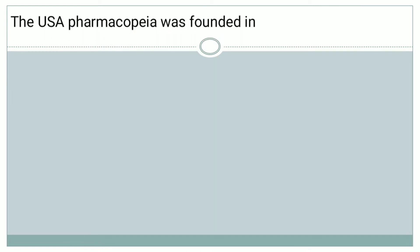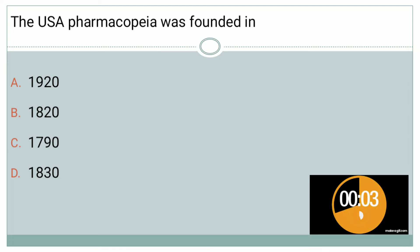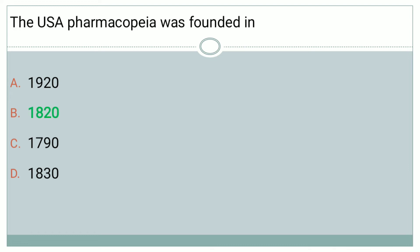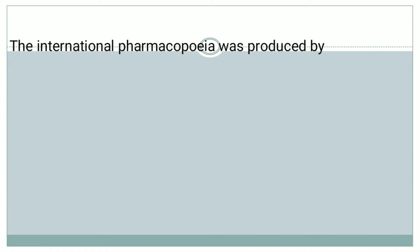The next question: The USA Pharmacopeia was founded in — Option A: 1920, Option B: 1820, Option C: 1790, Option D: 1830. The right answer is Option B, that is 1820.